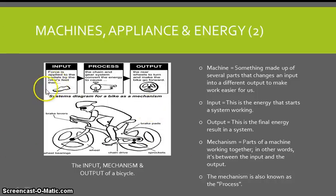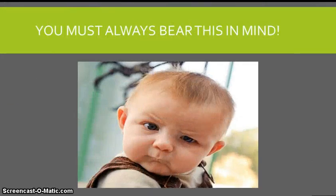So if we look at the bicycle, your foot starts all the energy off, the input, as you push down on the pedals. The process is the chain and the gear system converts the energy. And that causes the rear wheels to turn and make the bike go forward. So your feet start it all off, the chain and the gears turn as a result, that's the process. And then because that happens, the back wheel turns and so the bike goes forward. That's the output. You must always bear this in mind. Input, process, output.